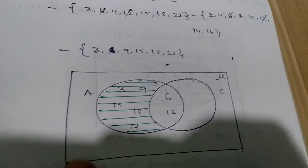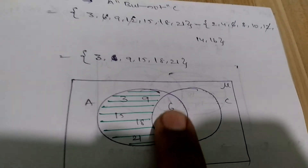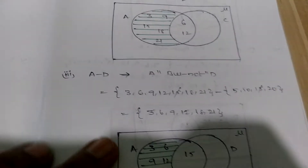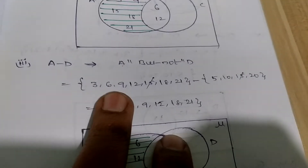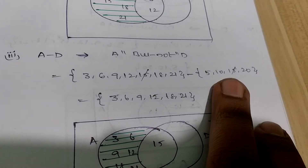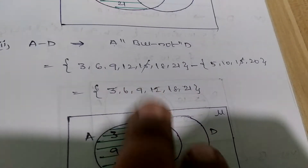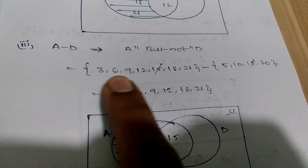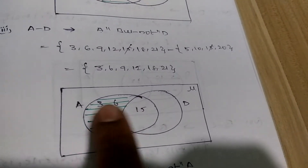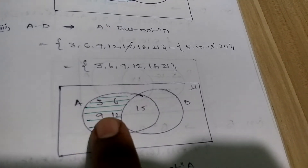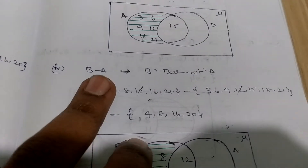When you draw the Venn diagram, shade the region for only A — not the included common area. Coming to A minus D, nothing but A but not D. Multiples of 3 and multiples of 5: the only common element is 15. Other than 15, mention the remaining elements as the result. When you draw the Venn diagram, mark only the A region, not the common region.